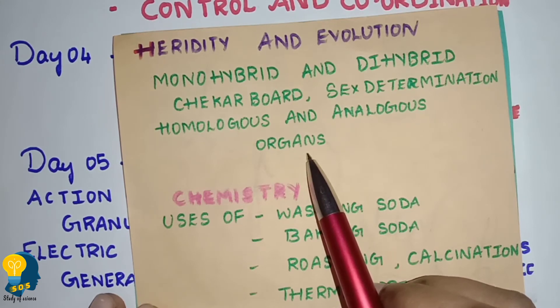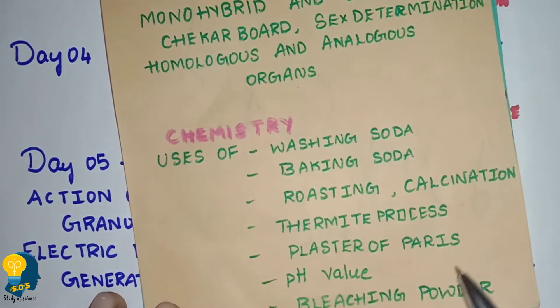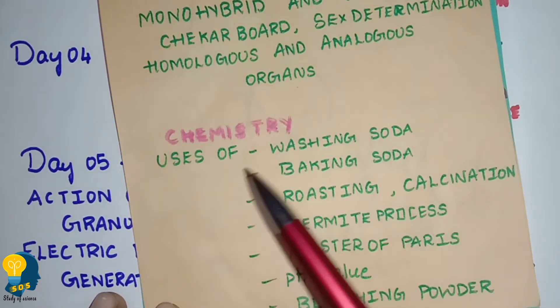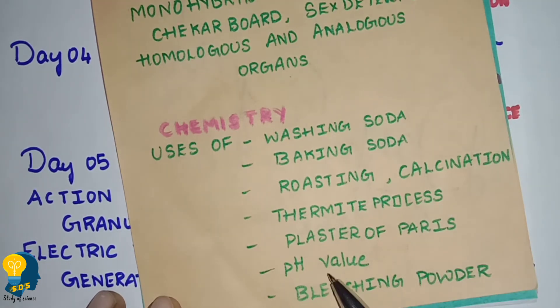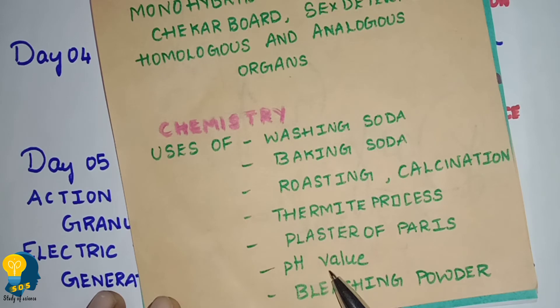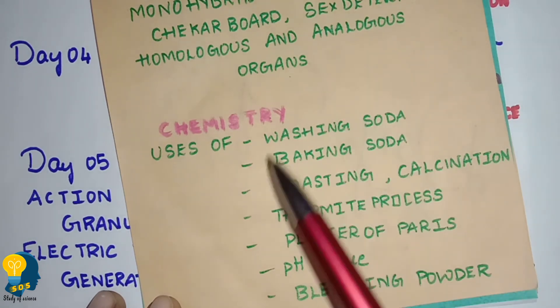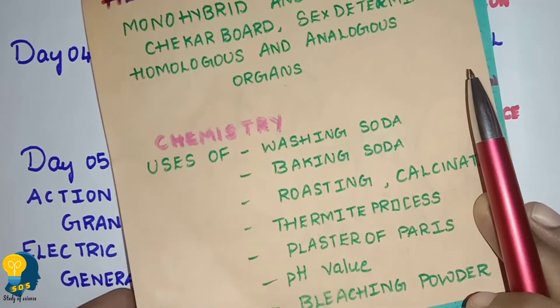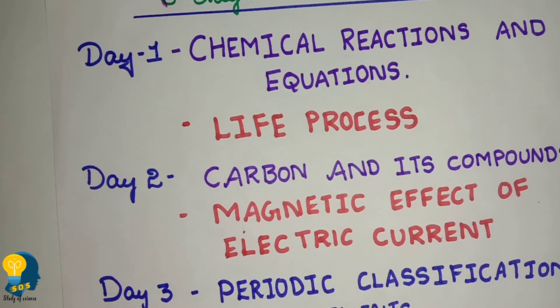Also study Acids and Bases lesson and Metals and Non-Metals lesson. In Acids and Bases, study uses of washing soda, baking soda, and bleaching powder. Study pH values — pH 0 to 14; below 7 is acidic, above 7 is basic, 7 is neutral. Also study plaster of Paris uses, thermite process, roasting, and calcination. These concepts have been covered in previous sessions.